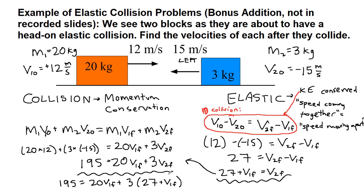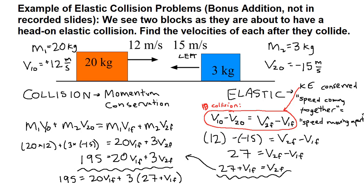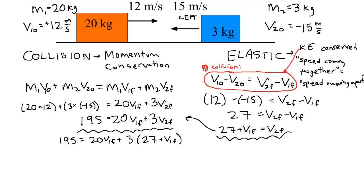So 195 equals 20 V1F plus 3, and then instead of V2F, we're going to substitute 27 plus V1F. We're going to distribute the 3. So we're going to distribute the 3, so still 195 on the left. We still have 20 times V1F. 3 times 27 is 81. 3 times V1F is 3 V1F. We can subtract 81 from both sides. So we get 114 on the left and 23 V1F on the right. So we can divide both sides by 23.